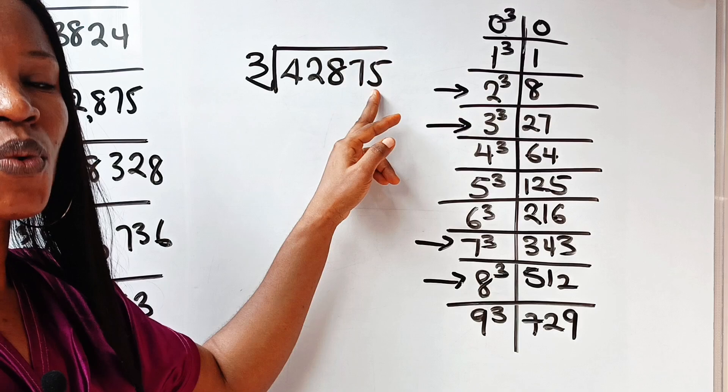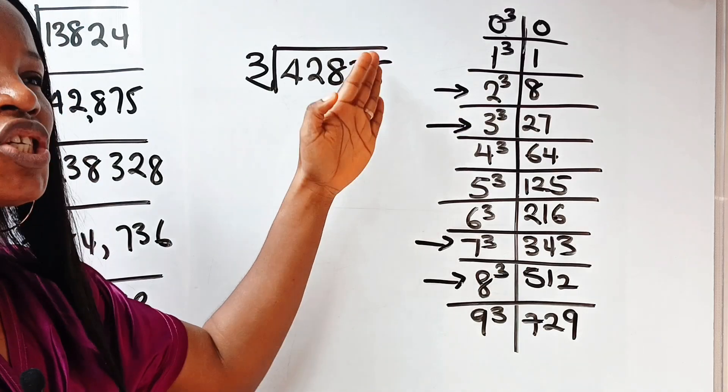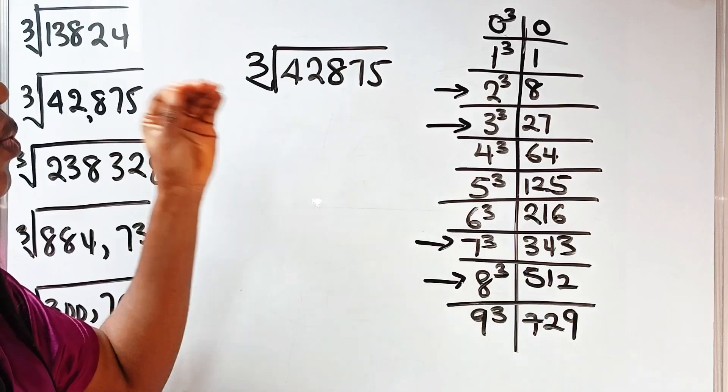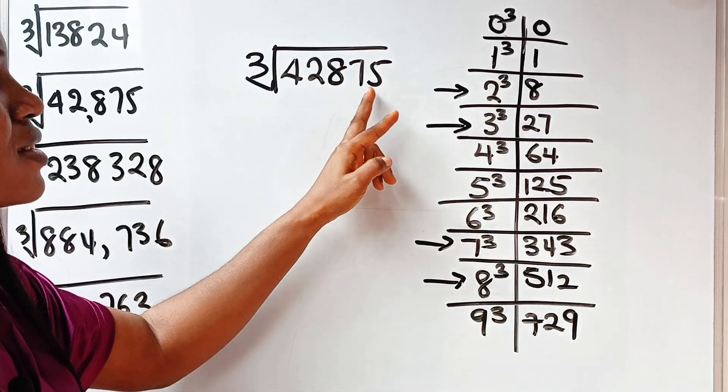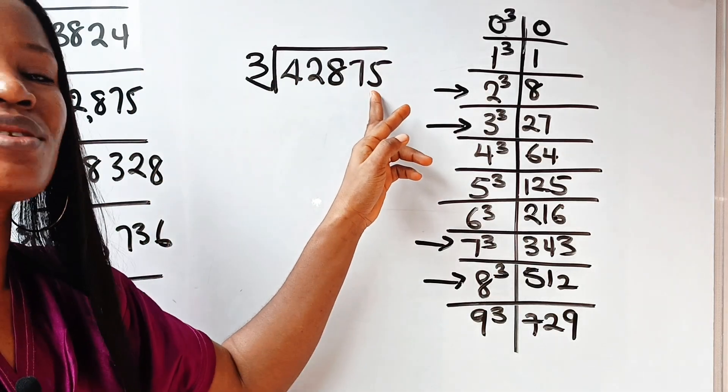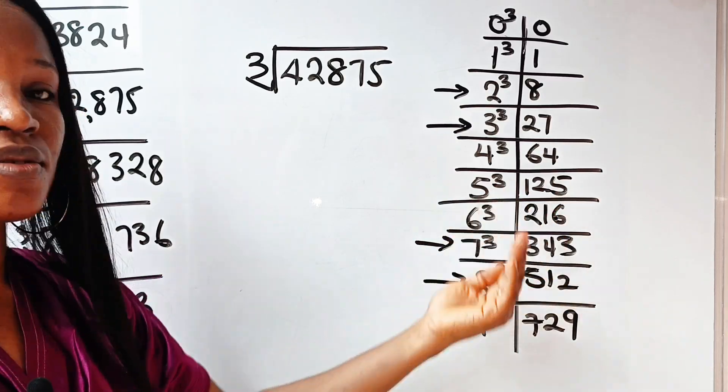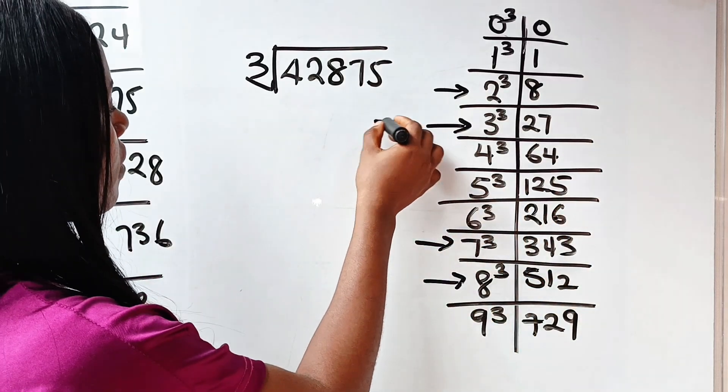Now, let's go to this. So look at 5. That is what we are seeing here. I don't need to check my table to know that a number that will give me, what number will I cube to get a number that will end with 5? It will still be 5. I don't even need to check. That is the only one that ends with 5. It's still 5. So I'll write that 5.